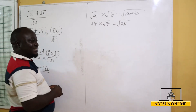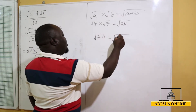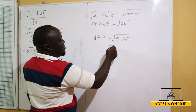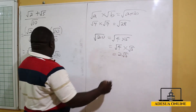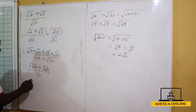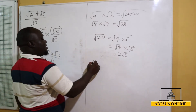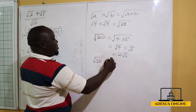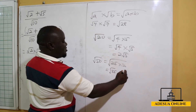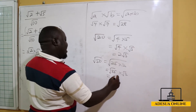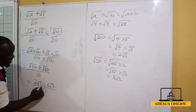Now we simplify root 20 and root 50. Root 20 equals root 4 times 5, which is root 4 times root 5, giving us 2 root 5. Root 50 equals root 25 times 2, which is root 25 times root 2, giving us 5 root 2. So we have 2 root 5 plus 5 root 2, all divided by 10.